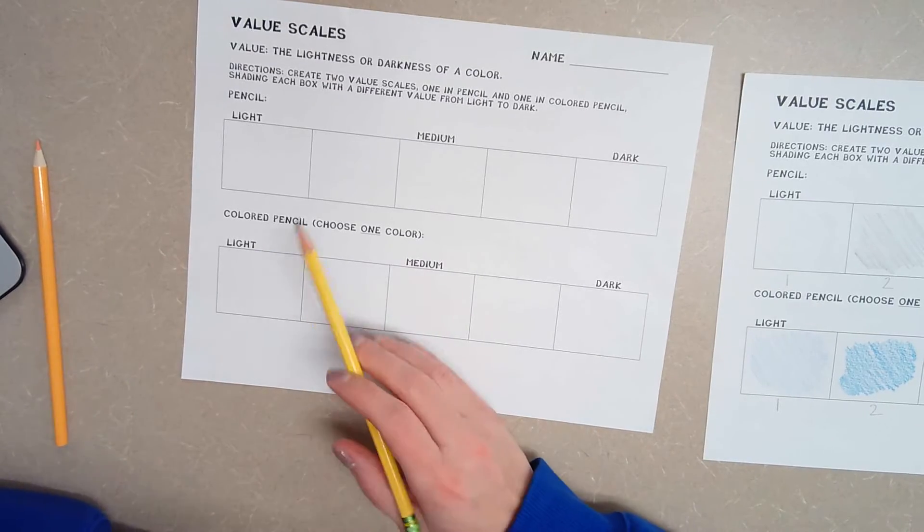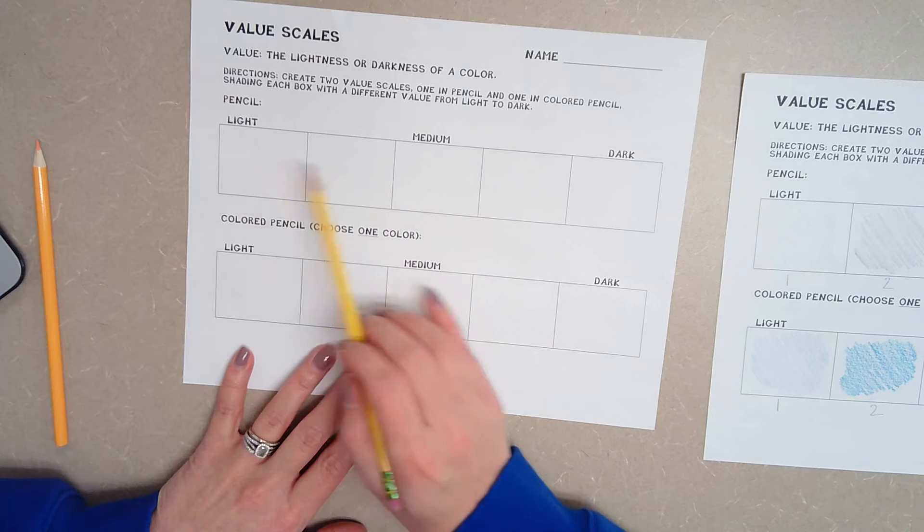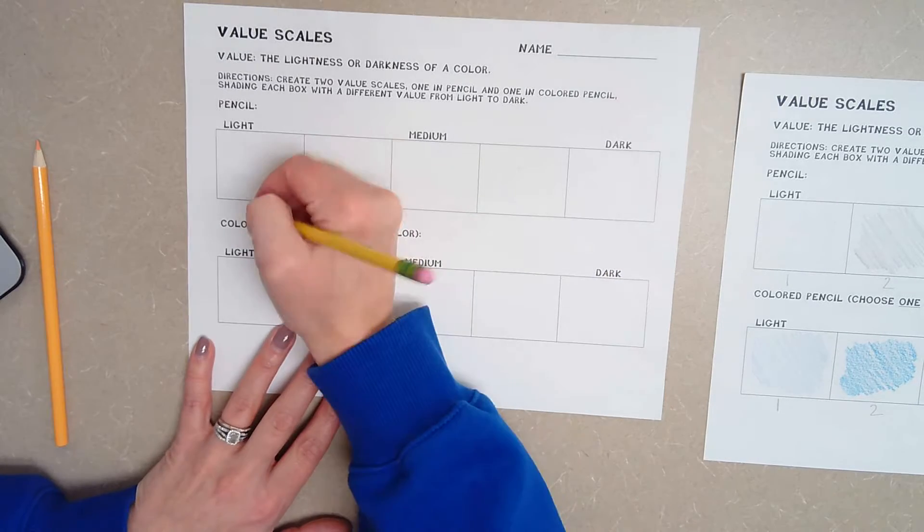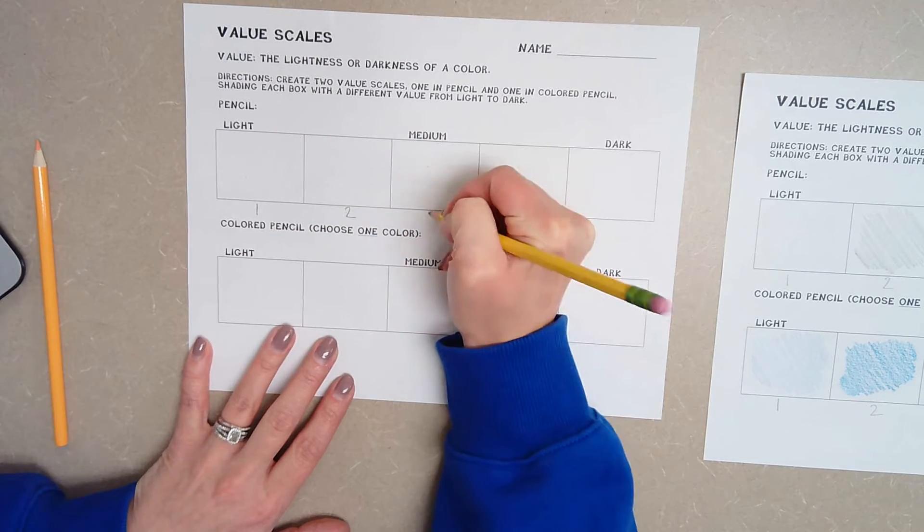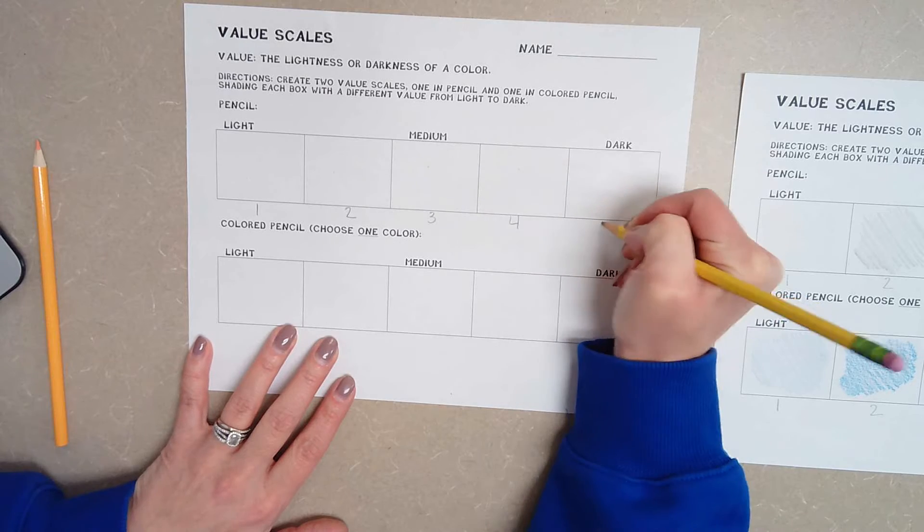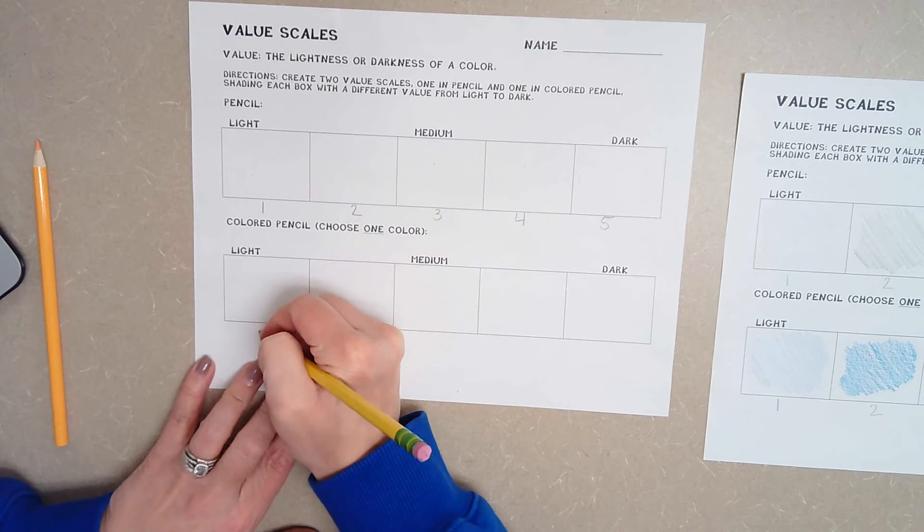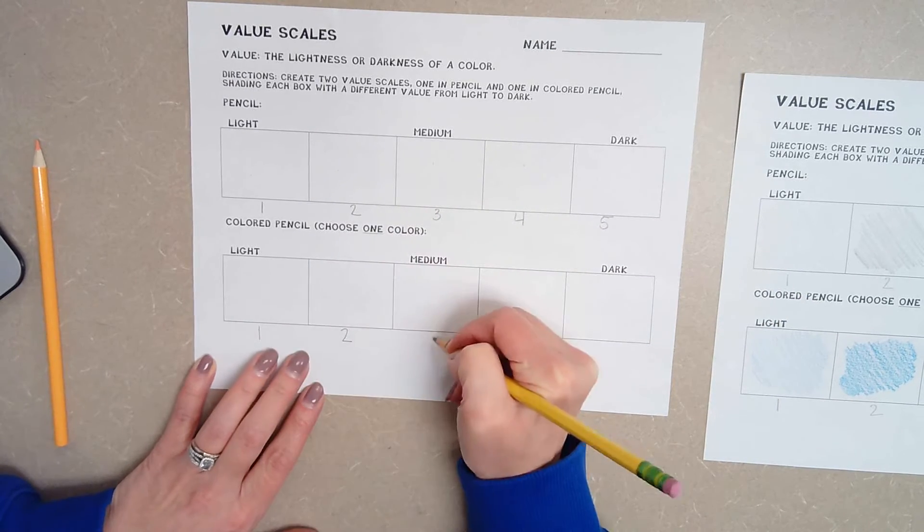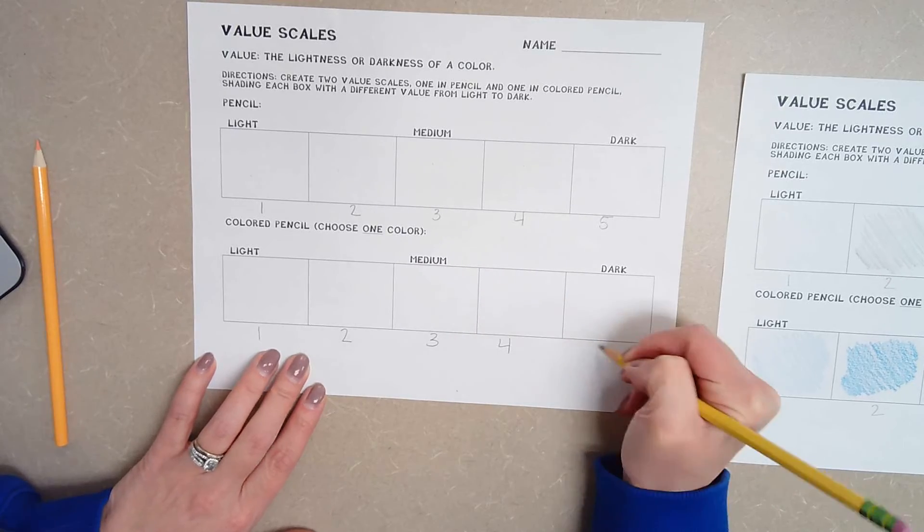What I like to do is set this up one, two, three, four, five. So I'm going to write one, two, three, four, five, and I'm going to do the same thing down here. One, two, three, four, five.